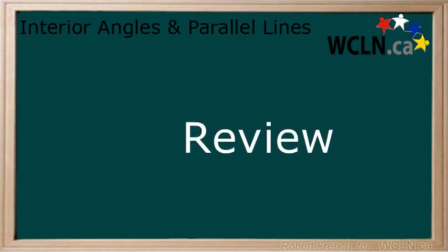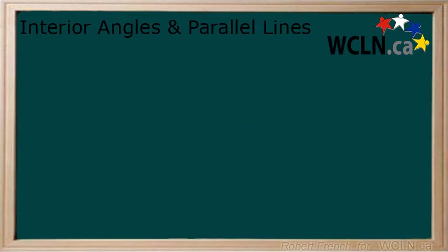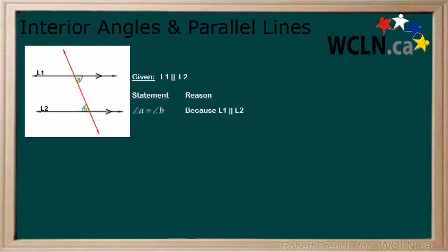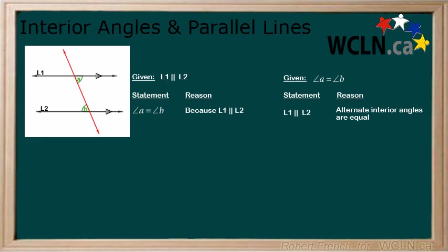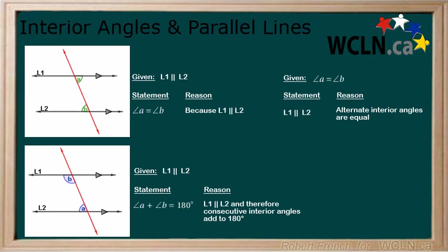In this lesson, you learned about interior angles and parallel lines. If you have parallel lines, then the alternate interior angles are equal. This is true the other direction as well — if you have alternate interior angles that are equal, then the lines are parallel. You also learned that if you have parallel lines, then the consecutive angles created by these lines add to 180 degrees. Again, this is true the other direction as well: if you have consecutive interior angles that add to 180 degrees, then you have parallel lines.